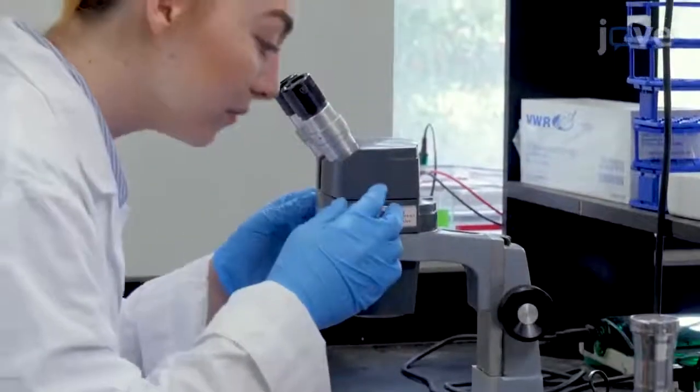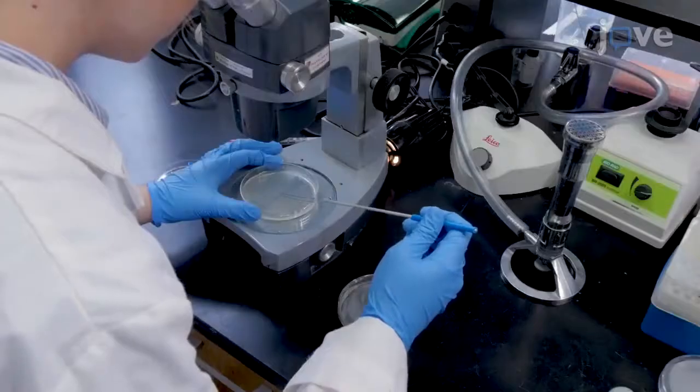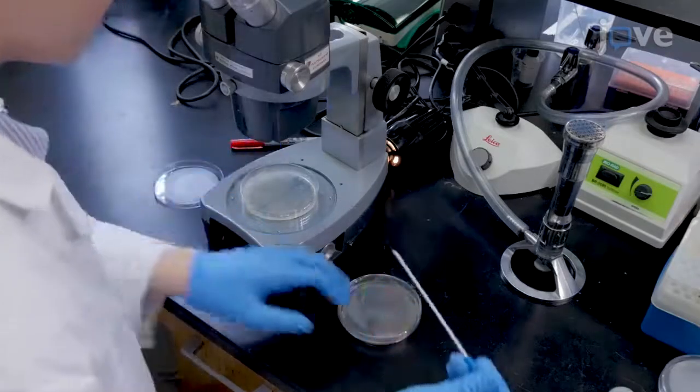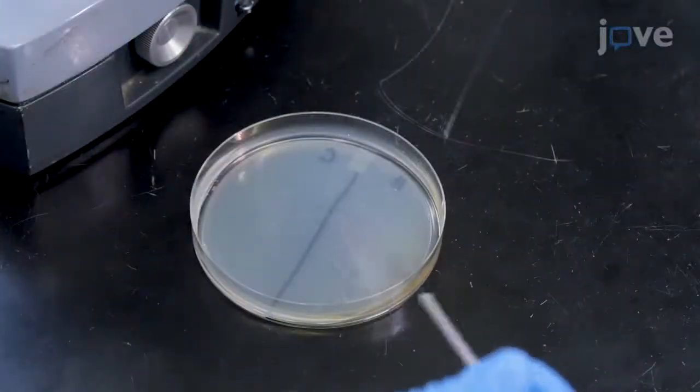The next morning, use a light microscope to carefully select pili negative colonies without dark edges, or pili positive colonies with dark edges from each plate, and streak the picked colonies onto new GCK plates for a 16-18 hour culture at 37 degrees Celsius and 5% carbon dioxide.